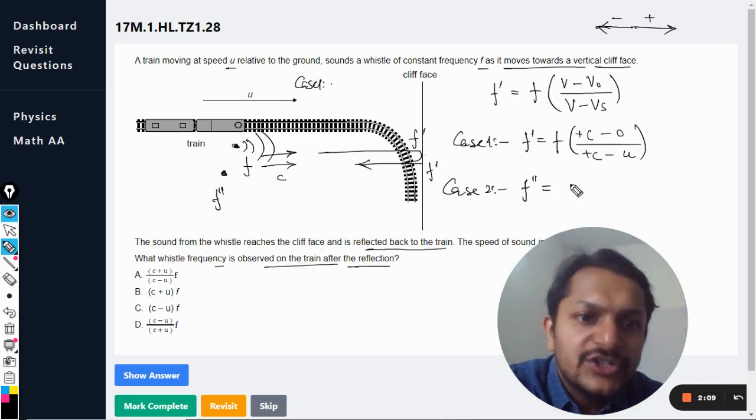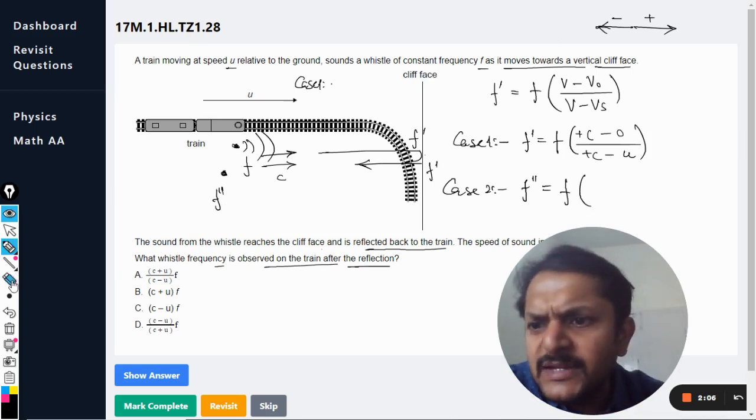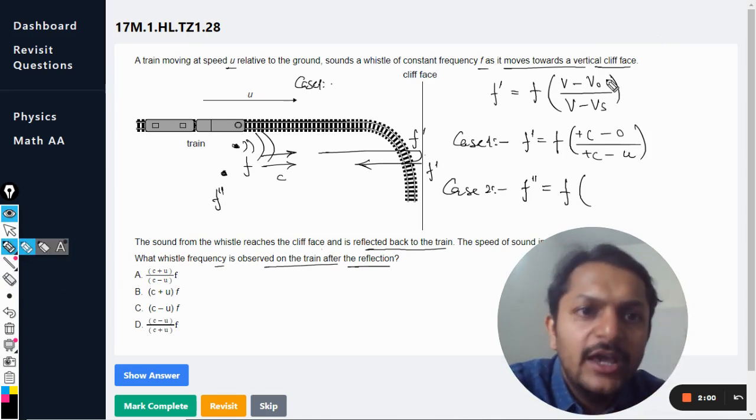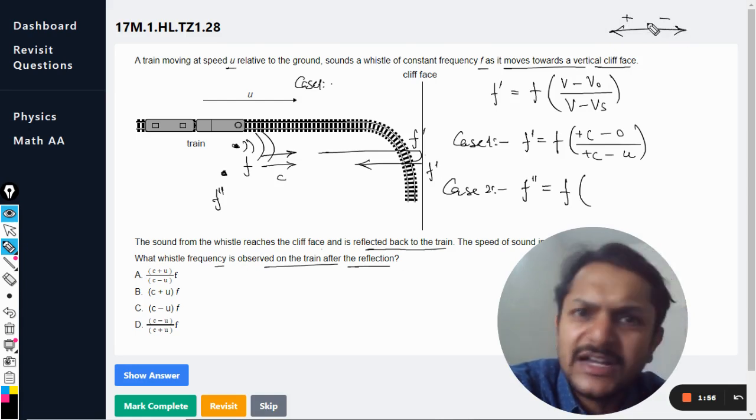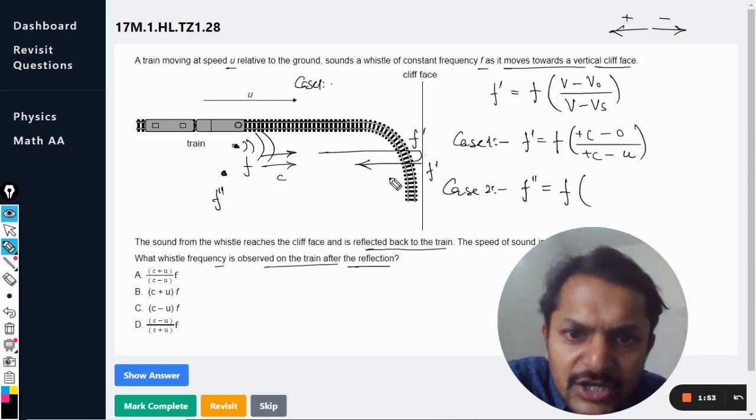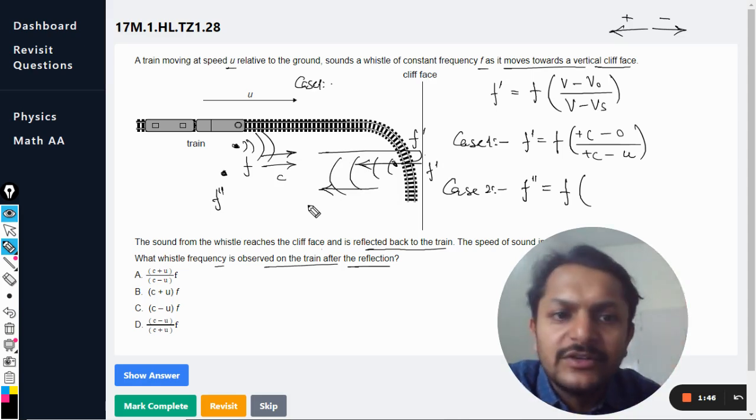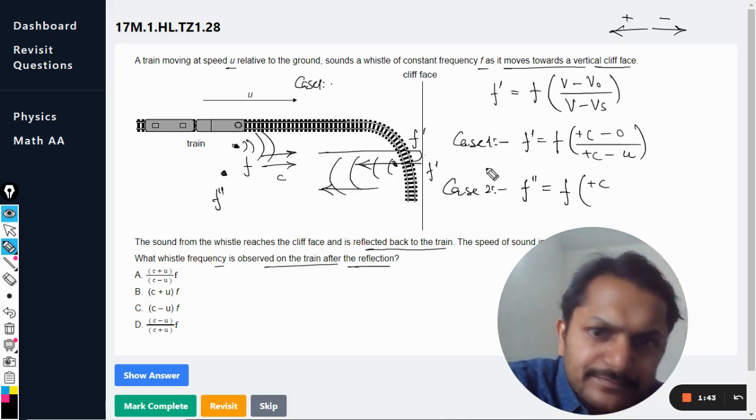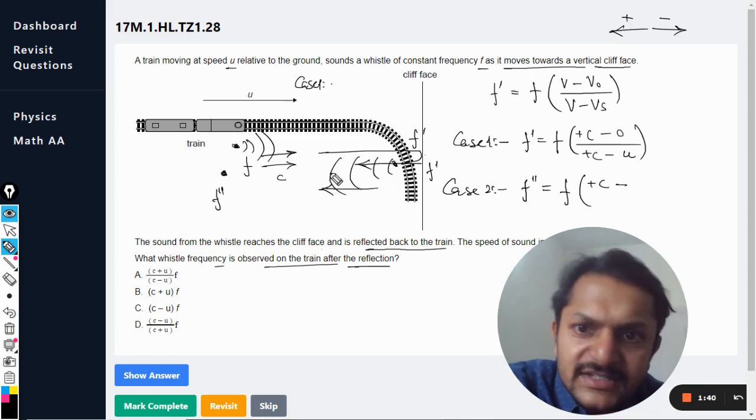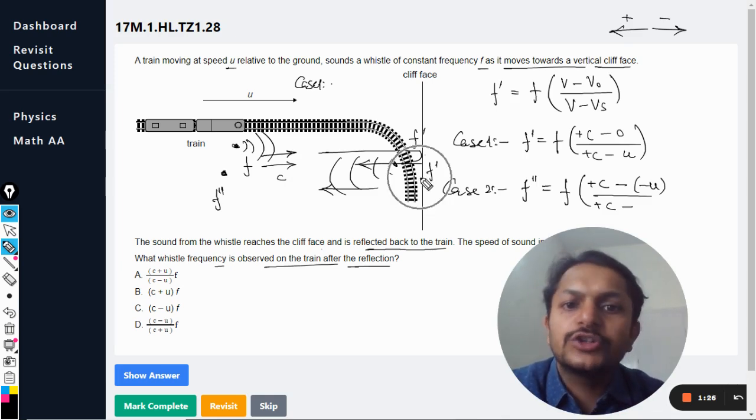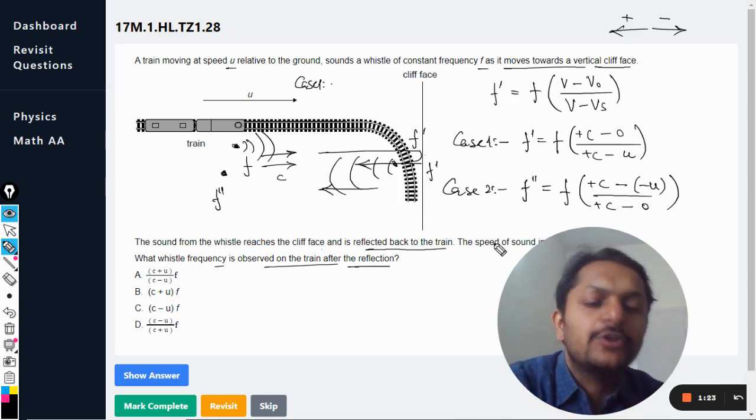Let us now go for case two. We are concerned with f double dash which is now received here. So f into... now I change my sign convention for this case, no problem at all. So now I choose this sign convention: this side is taken as positive, this is taken as negative. Now the sound is also moving like this, so we have taken the direction of the sound as positive, so it would be plus c minus. But now the observer is moving in the positive direction, so it would be negative u divided by plus c minus. The receiver, the source, is not moving, so this will become zero.